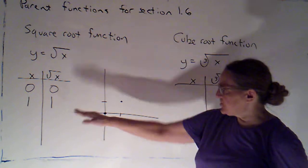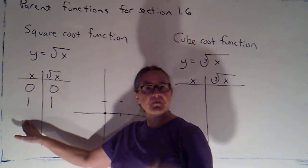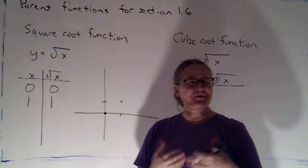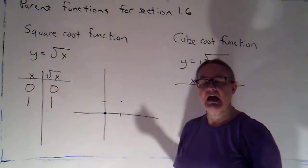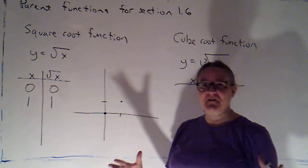So I'll plug in 1, and the square root of 1 is just 1, so I can plot the point (1, 1). Now for a lot of functions, the next number that I'd plug in would be 2. But I don't want to evaluate the square root of 2 because that doesn't work out nicely.